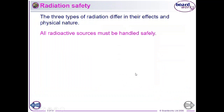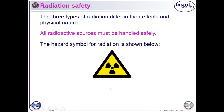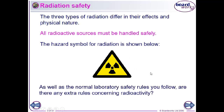We need to handle radioactive sources very carefully because of the danger of killing cells, causing DNA damage, and making cells cancerous. Radioactive isotopes are marked with the radiation hazard symbol. Extra safety rules include wearing gloves to make sure we don't get any particles of the source inside our body.